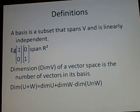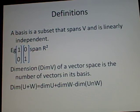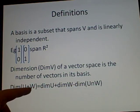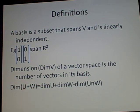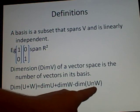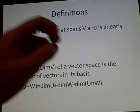Dimension (DimV) of a vector space is the number of vectors in its basis. Here we have dimension 2. There's a formula: dim(U+W) = dimU + dimW - dim(U∩W). I couldn't find the intersect symbol so I used 'n'.